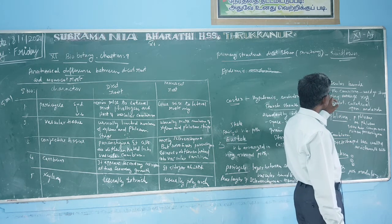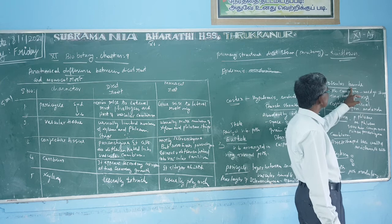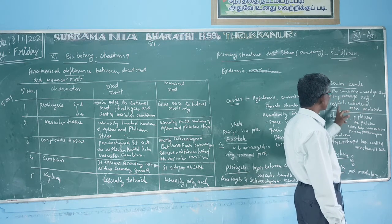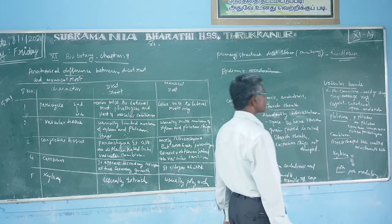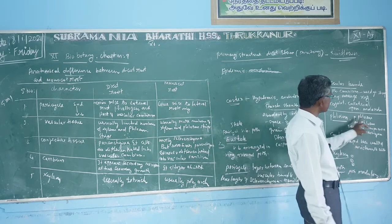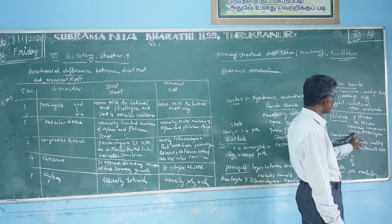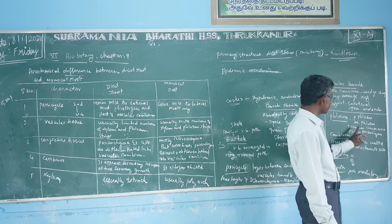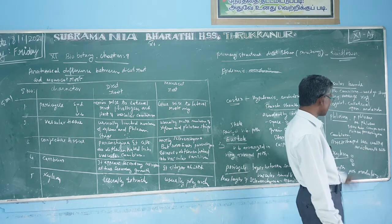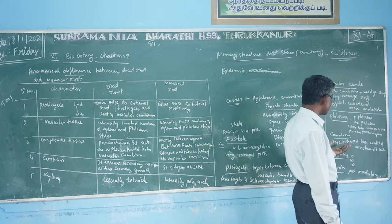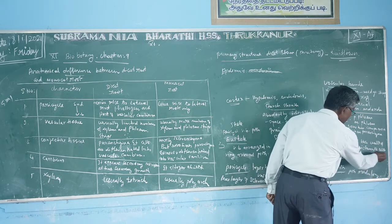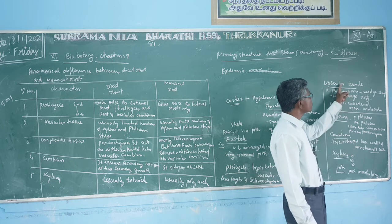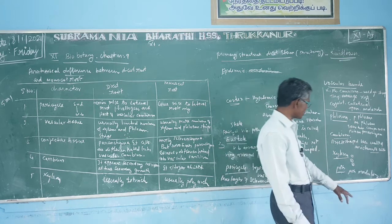Next, the vascular bundle consists of xylem, phloem, and cambium. These vascular bundles are arranged in a ring — they are conjoint, collateral, open type, with endarch protoxylem. The phloem includes primary phloem, metaphloem, sieve tubes, companion cells, and phloem parenchyma. Phloem fibers are absent. The cambium consists of brick-shaped thin-walled meristematic cells present between xylem and phloem — this makes it an open type vascular bundle.